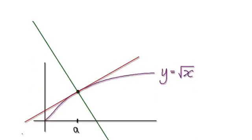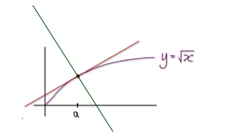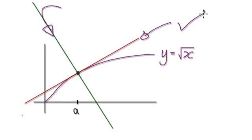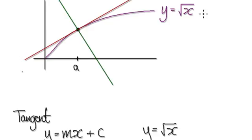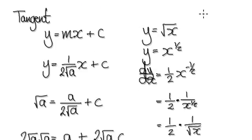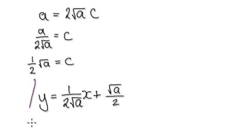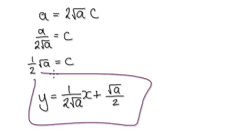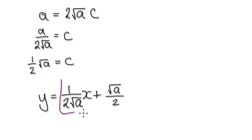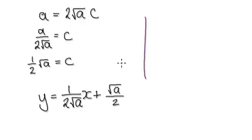Following on from the previous video, we were trying to work out the equation of the tangent line and the equation of the normal line. We've done the tangent line and it gave us an equation — this would be our gradient and this would be our intercept. So we've done the tangent line.